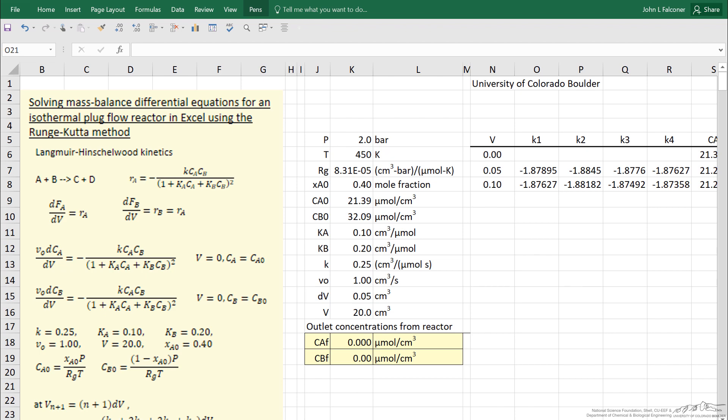The mass balances are written in terms of the molar flow rate. So FA is the molar flow rate, and the rate that A is used up is the same rate that B is used up. So the two equations are almost identical.